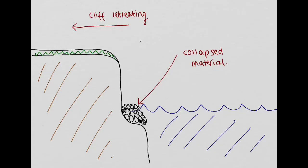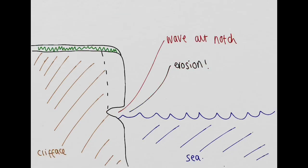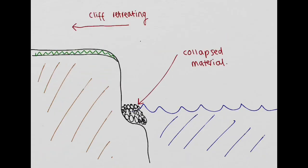So this process will continue over and over again. Now the sea and its erosional processes will eventually remove this collapsed material. And upon removing this collapsed material, we go back to the first stage. We go back to another wave cut notch starting to establish. This wave cut notch establishes, the same process repeats again, and you get further cliff retreating.